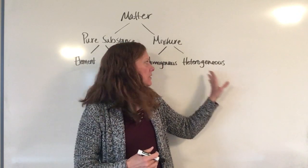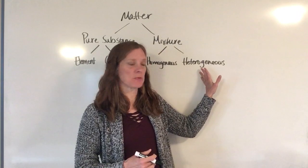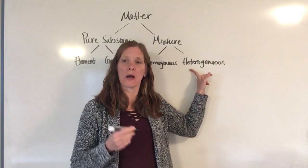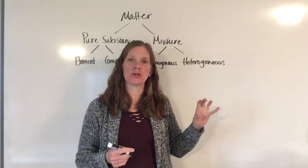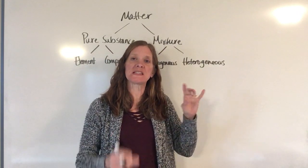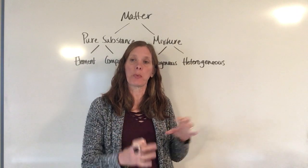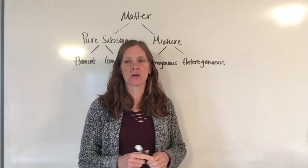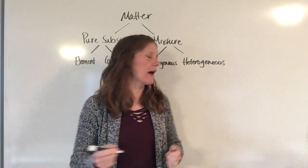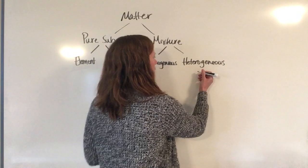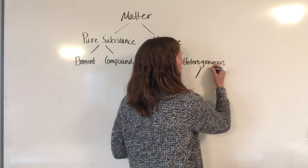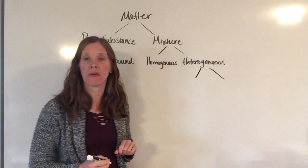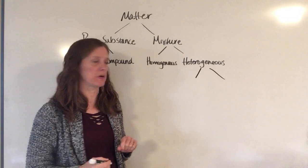Heterogeneous mixtures — "hetero" means different, so hetero means that you can actually see the different parts of the mixture, like in a trail mix. We're going to break heterogeneous mixtures down into two different types: the first type is called a suspension and the second type is called a colloid.